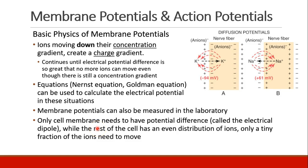There are equations to calculate the electrical potential in these situations, and membrane potentials can be measured in a laboratory with electrodes. Importantly, only the cell membrane needs to have a potential difference — we call this the electrical dipole. The vast majority of the cell has an even distribution of ions; the cell is overwhelmingly neutral. But right at the membrane, a tiny fraction of ions move enough to create this membrane potential, and we'll see why that's significant in the next slides.